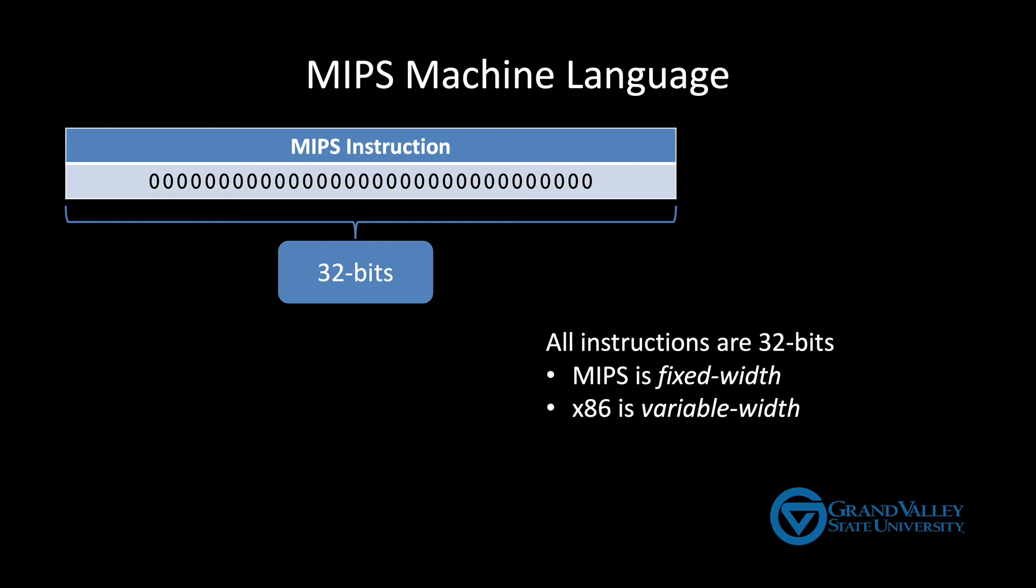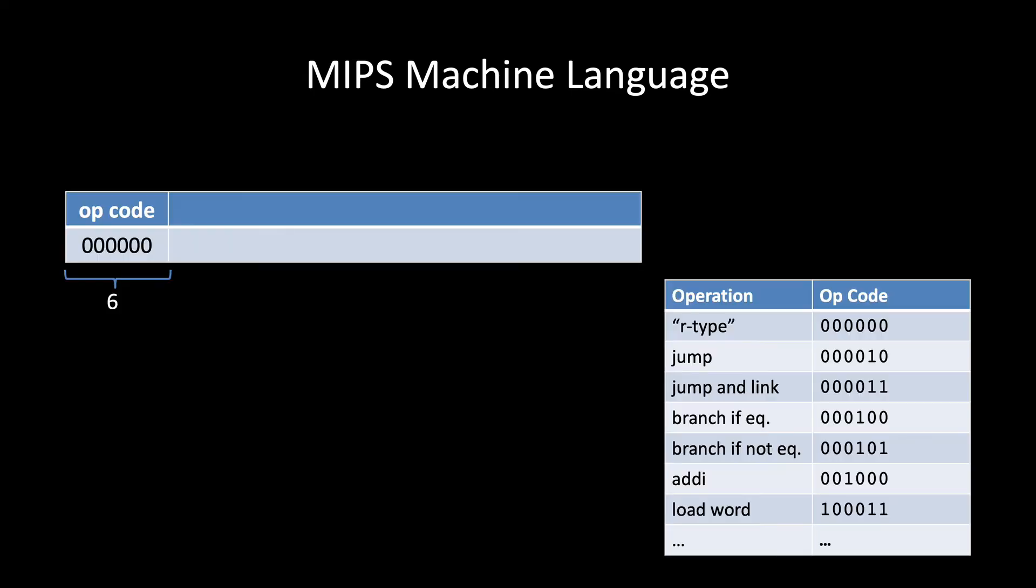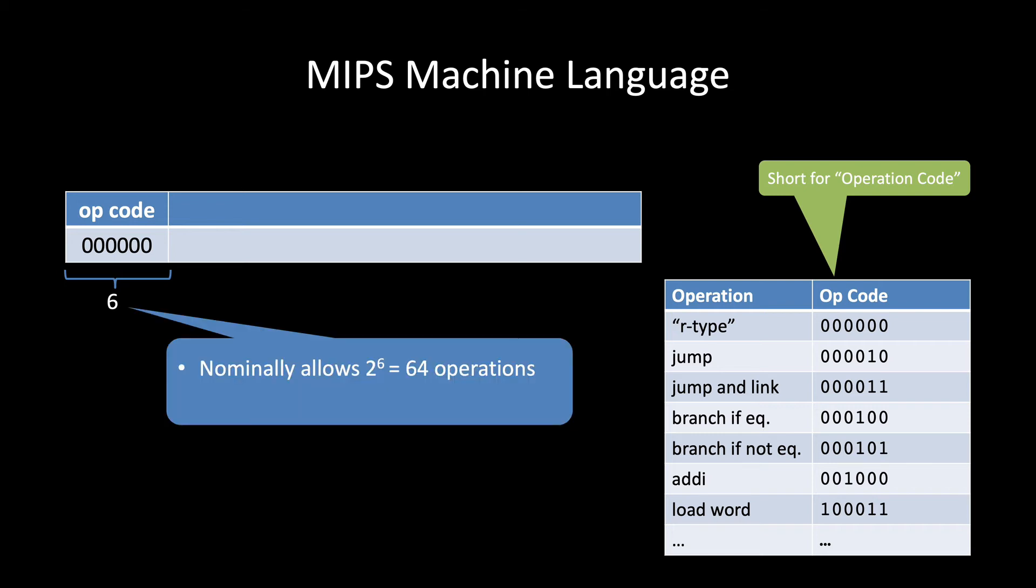The most significant six bits of a MIPS instruction is the opcode, which is short for operation code. At a high level, the opcode tells the CPU what to do. Add, subtract, branch, jump, load, store, whatever. A 6-bit opcode nominally gives you 2 to the 6 or 64 different operations. But we'll see in a minute that there are some tricks to let you get more. Now the meaning of the rest of the 32 bits in a MIPS machine instruction depends on the specific operation. You need different information to do addition than you need to do something like an if statement.